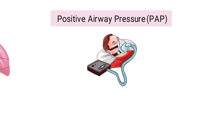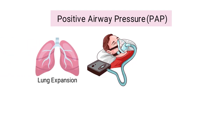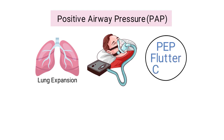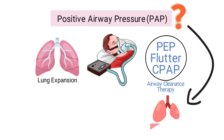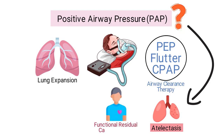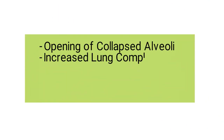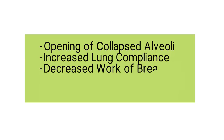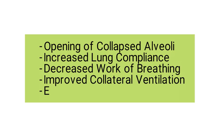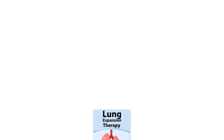Next we have positive airway pressure, a technique in which a device delivers positive pressure to improve lung expansion. It involves the use of PEP, flutter, and CPAP. PEP and flutter can be used for airway clearance therapy; however, we're looking at how PAP can be used to treat and prevent atelectasis. In general, positive airway pressure therapy helps increase the patient's functional residual capacity, resulting in the opening of collapsed alveoli, increased lung compliance, decreased work of breathing, improved collateral ventilation, and enhanced secretion removal.